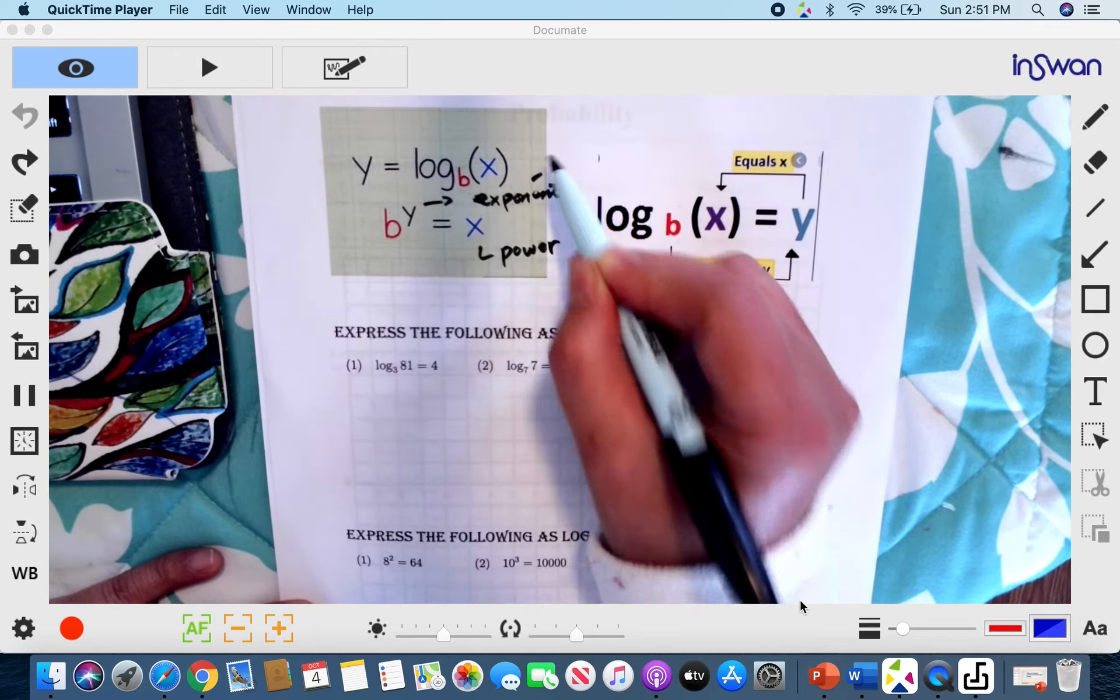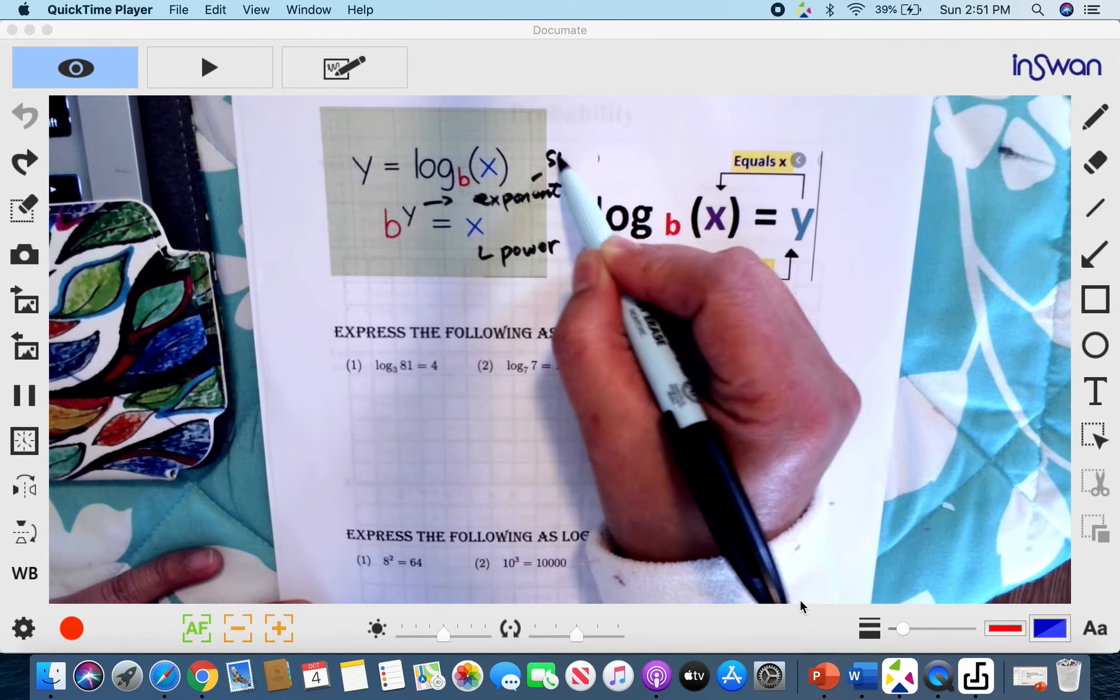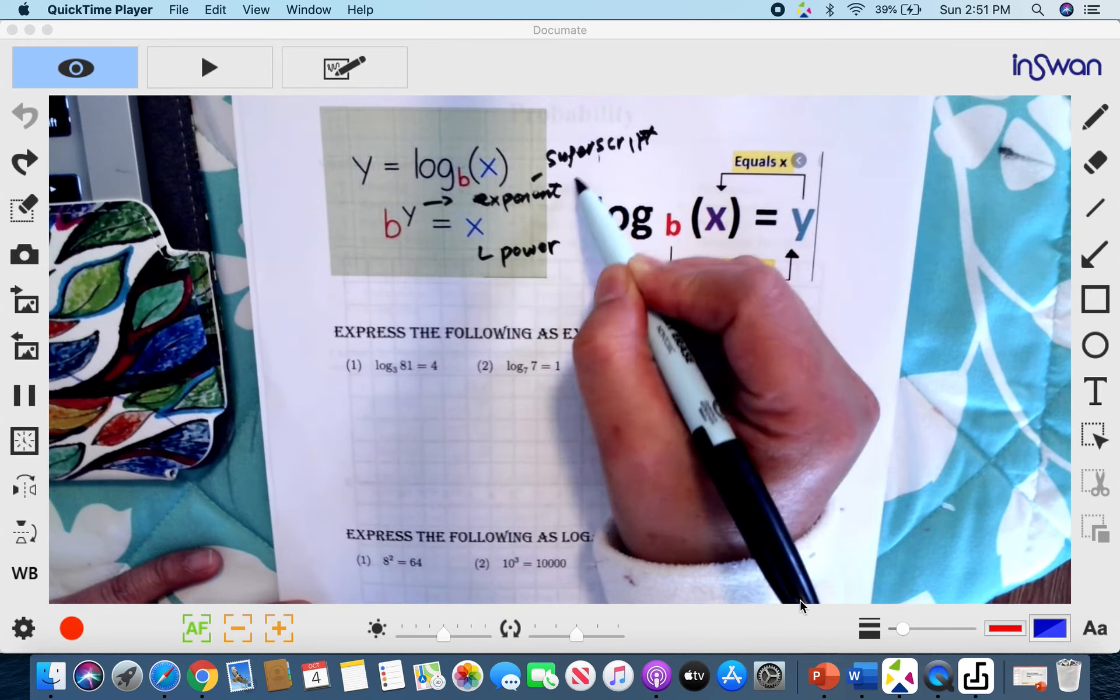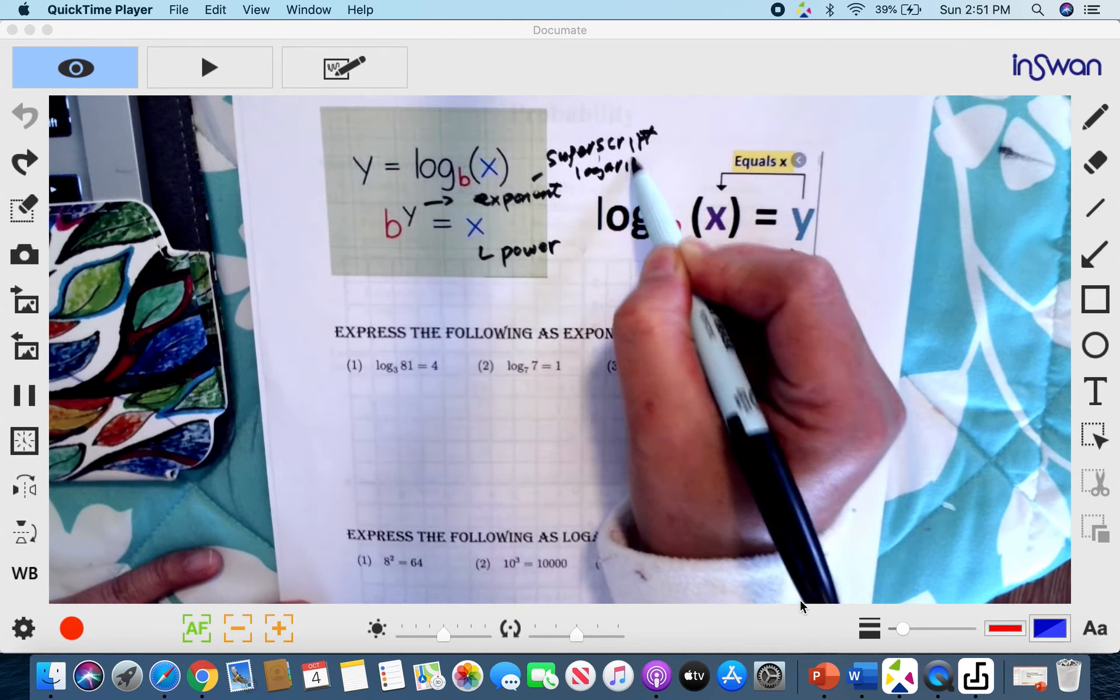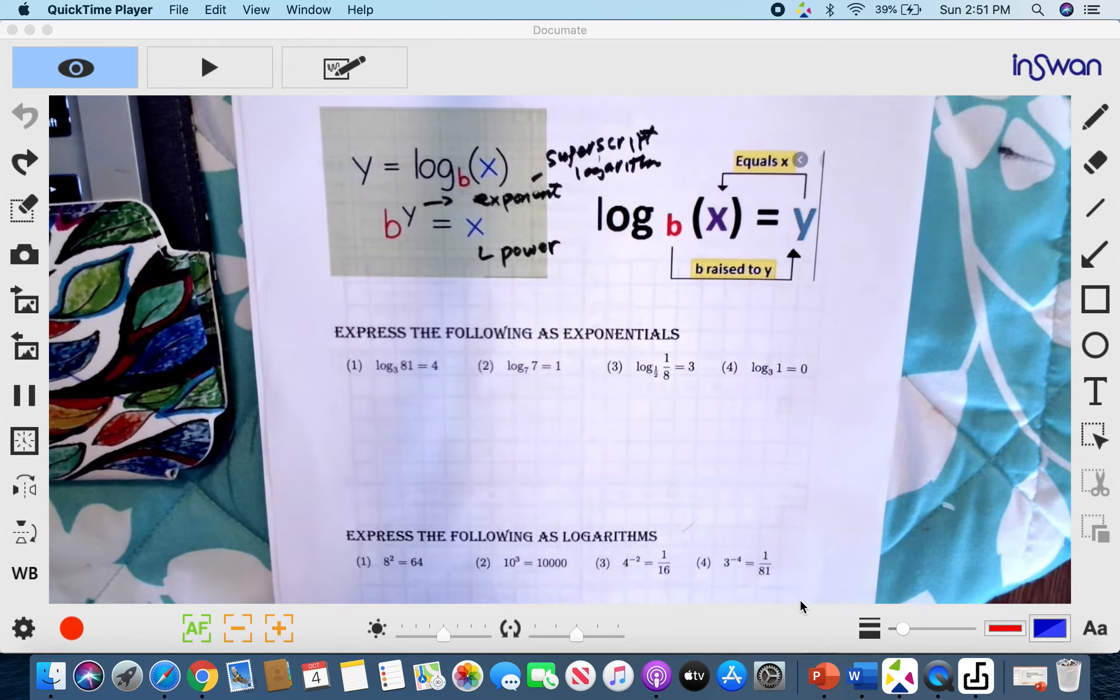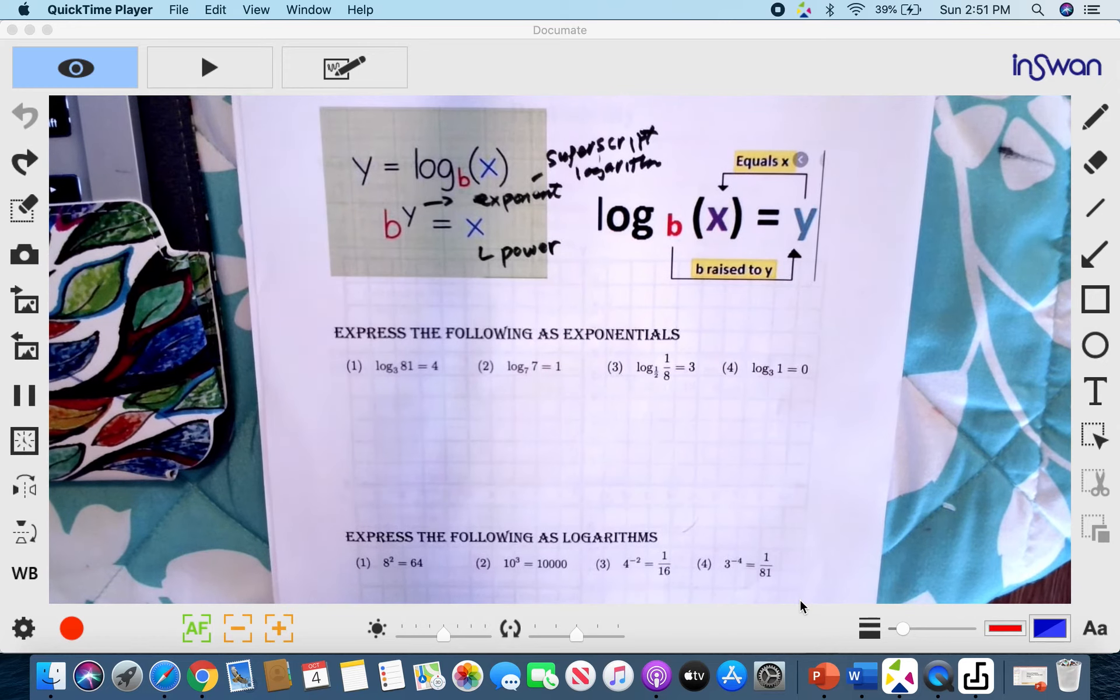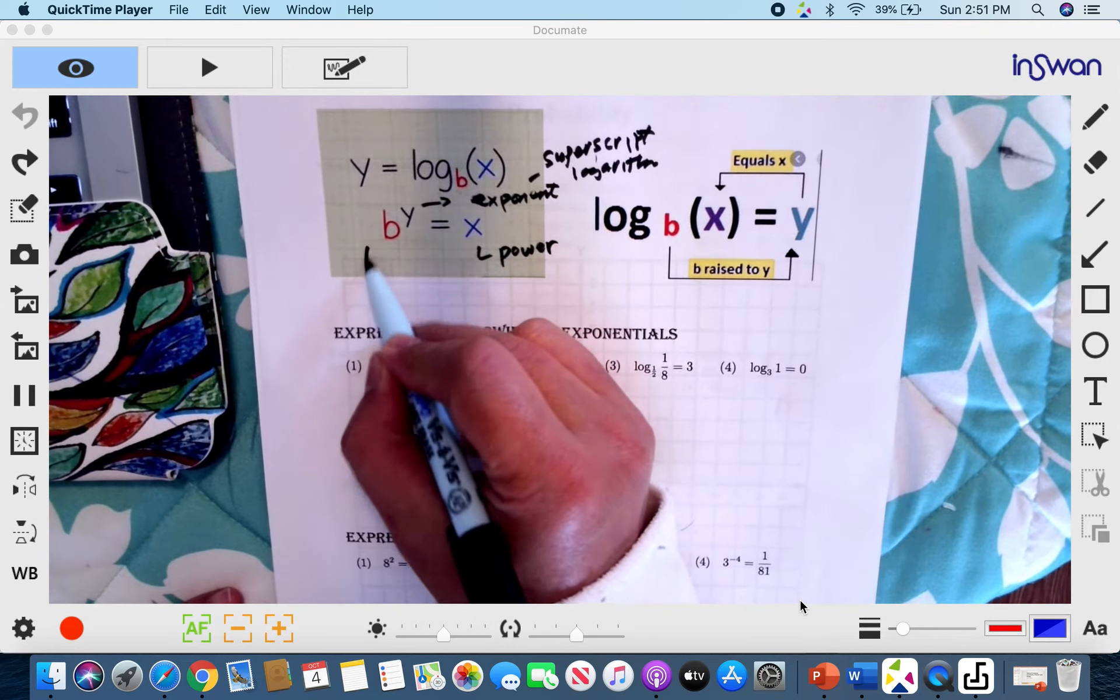So it has really three names: exponent, superscript, and also logarithm. That's why we say subscript, because it's written under. So if it's written above, that's superscript, like Superman. And of course, b is our base.